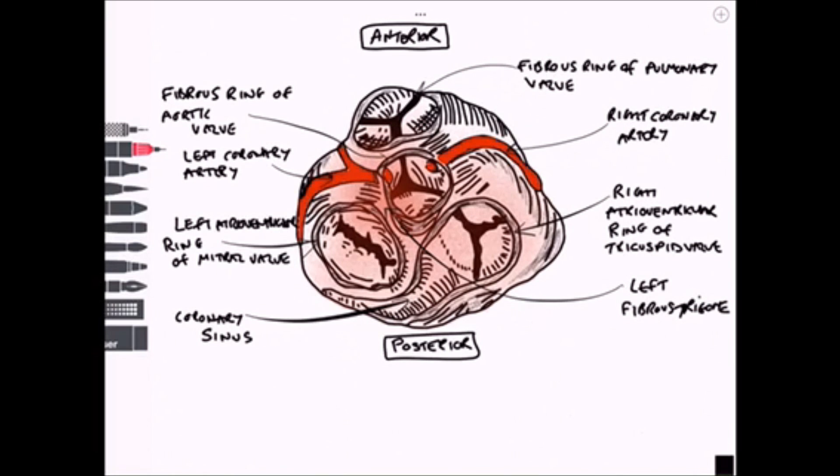We've got the coronary sinus that can be seen from the tricuspid valve and the left fibrous trigone and the right fibrous trigone.